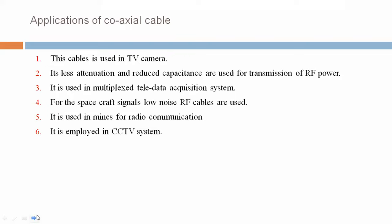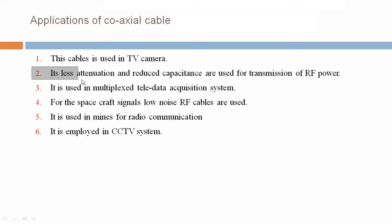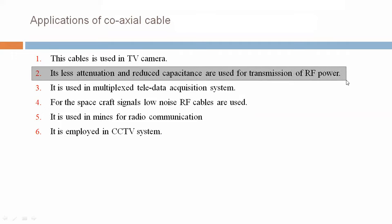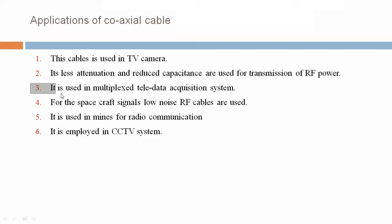Now we are discussing applications of co-axial cable. First, this cable is used in TV cameras. Second, its less attenuation and reduced capacitance make it suitable for transmission of RF power. Third, it is used in multiplex tele-data acquisition systems.